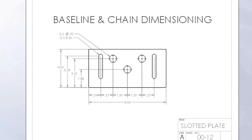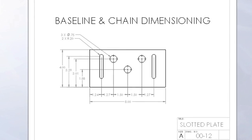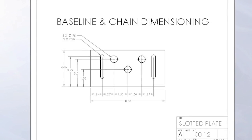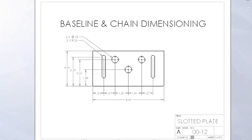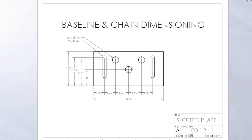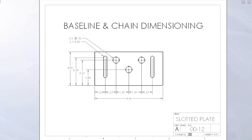The size of the plate is dimensioned with baseline dimensioning, while the holes use chain dimensioning due to the importance of their position to each other. Using both systems allows for maximum clarity.